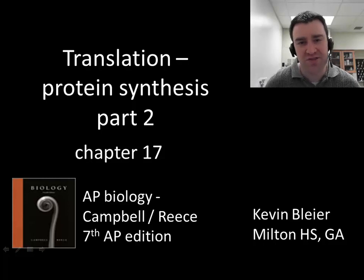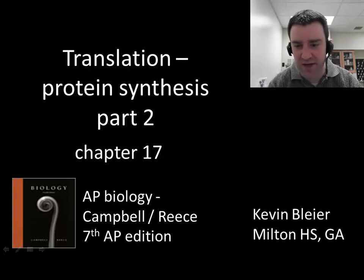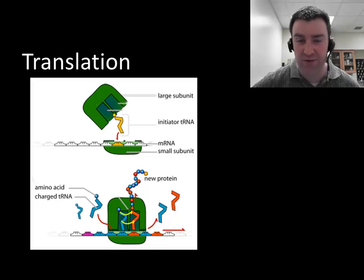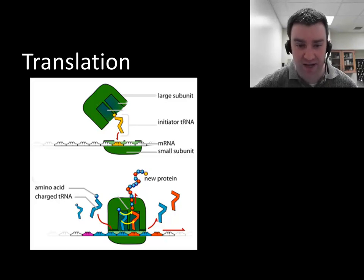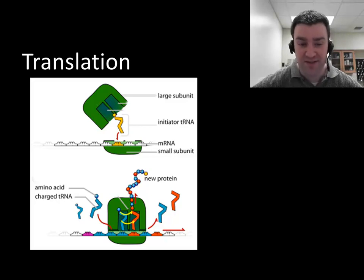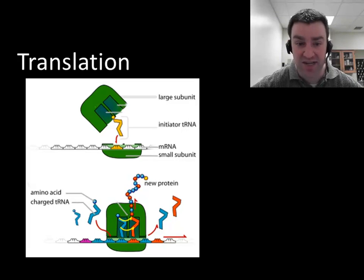In this video we're going to finish up the story of how proteins are constructed by talking about translation. We're assuming that transcription has already occurred and we've created a messenger RNA. If you're in a eukaryotic cell, the messenger RNA needs to have already left the nucleus, and then all of these events take place in the cytoplasm.